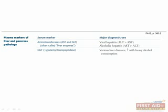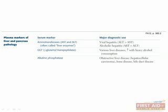GGT, or gamma-glutamyl transpeptidase, is typically ordered to confirm heavy alcohol consumption, though it can be elevated in various conditions. Alkaline phosphatase, affectionately referred to as ALKFOS or ALP, rises in obstructive liver diseases, such as hepatocellular carcinoma, or especially bile duct disorders. However, it's also elevated in bone disease, so it's not uniformly specific.